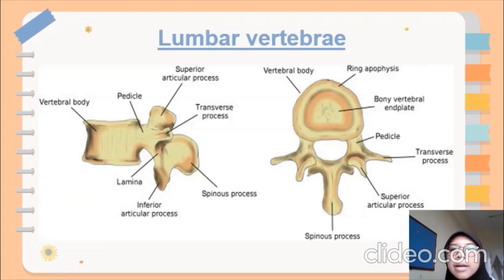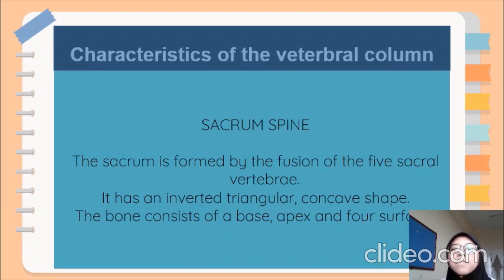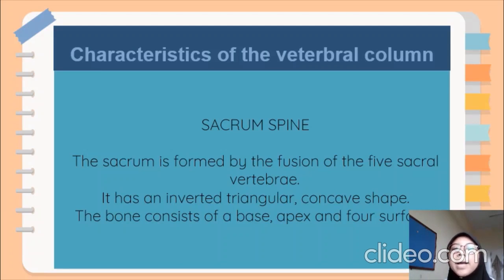This is the diagram of the lumbar vertebra. Next is the sacrum spine. The sacrum is inferior to the lumbar vertebrae. The characteristic of the sacrum is that it is formed by the fusion of five sacral vertebrae into a single bone in the adult.